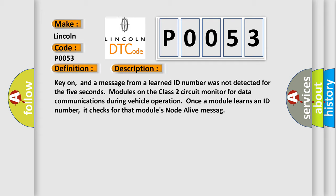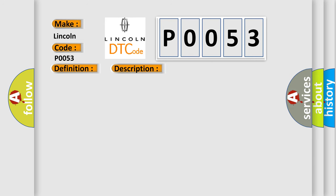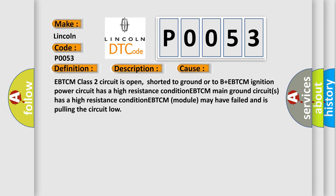This diagnostic error occurs most often in these cases: E-BTCM class two circuit is open, shorted to ground or to B plus. E-BTCM ignition power circuit has a high resistance condition. E-BTCM main ground circuits has a high resistance condition. E-BTCM module may have failed and is pulling the circuit low.